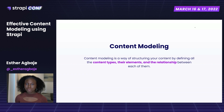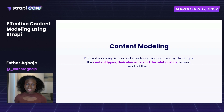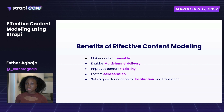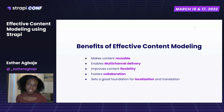Content modeling is a way of structuring and identifying the kind of content that is related to your website or your brand, identifying their attributes or elements, and then the relationship between these content types. Content modeling helps you to create reusable content — not just creating content for various channels, but creating one single source of truth for all the channels that will be serviced on various platforms.